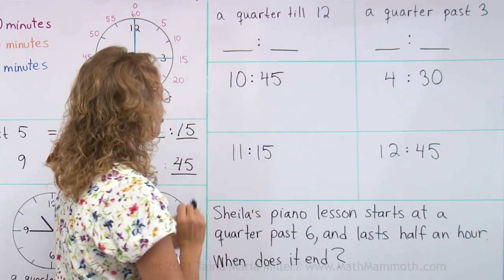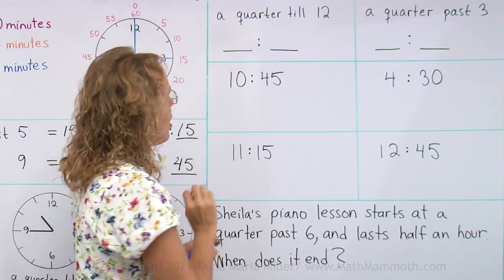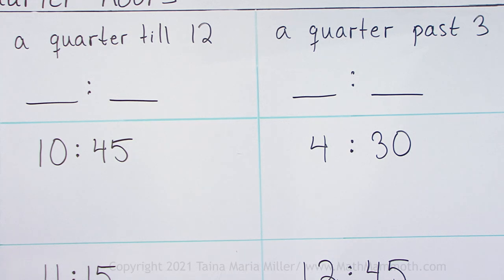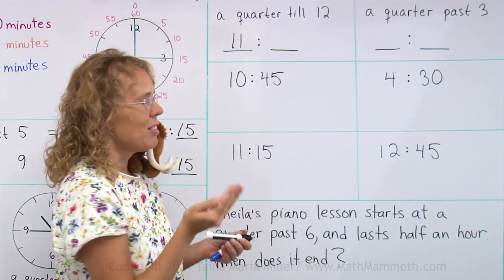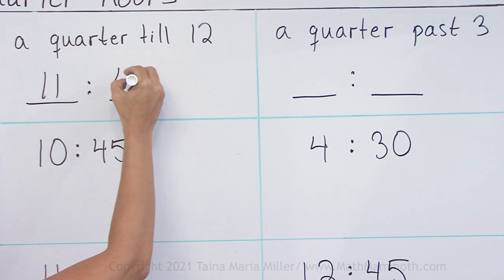Now over here, we will change this expression of time into the hours and minutes way. Quarter till twelve. A quarter till twelve. It's not yet twelve o'clock. It's not yet twelve hours, so it is still 11 hours. And then the quarter till means 15 till. Just like we studied already, it will be 45 minutes.